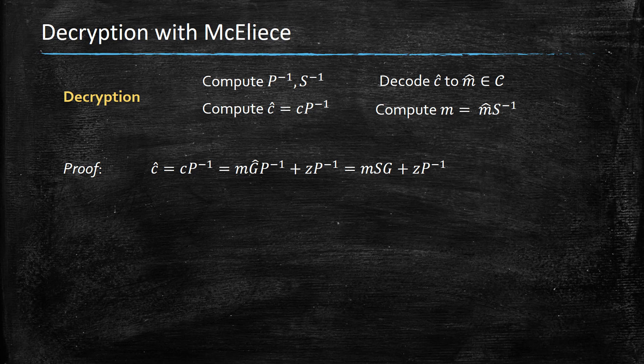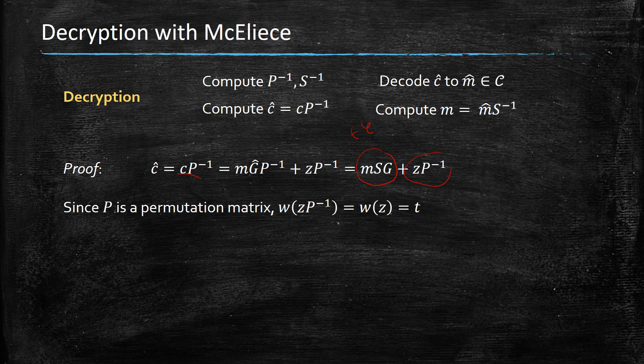C-hat, which is C multiplied by P-inverse, can be decomposed as a term which is a linear combination of the rows of G — basically a codeword — and an element Z times P-inverse. Because we chose P to be a permutation matrix, the Hamming weight of Z times P-inverse is the same as the Hamming weight of Z, which is exactly T. So on one hand we have a codeword, and on the other hand we have an element whose Hamming weight is at most T. So we know how to decode that element to retrieve M times S.